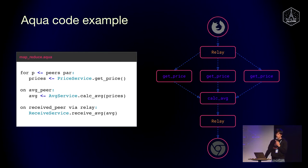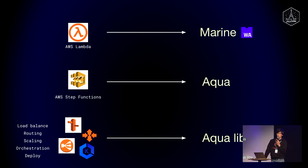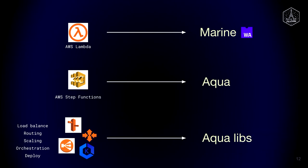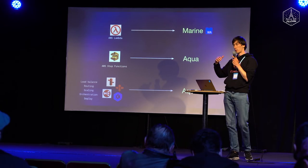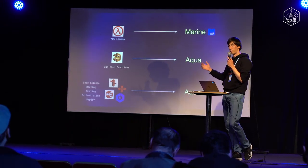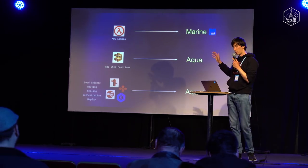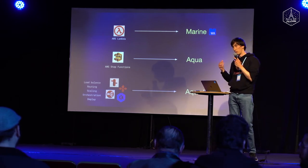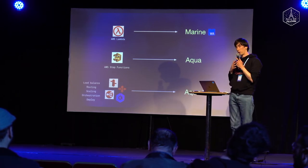The closest analogy would be Amazon Step Functions. If you know the Amazon stack, they have lambda functions — pure functions — and then step functions to describe the workflow as a JSON file. Aqua is much more flexible: it's a full-featured programming language. You can create any kind of algorithms or distributed systems. Aqua turns complex cloud services into libraries of the language — things like load balancing, routing, auto-scaling, orchestration, and deployment systems all become pieces of code in Aqua.